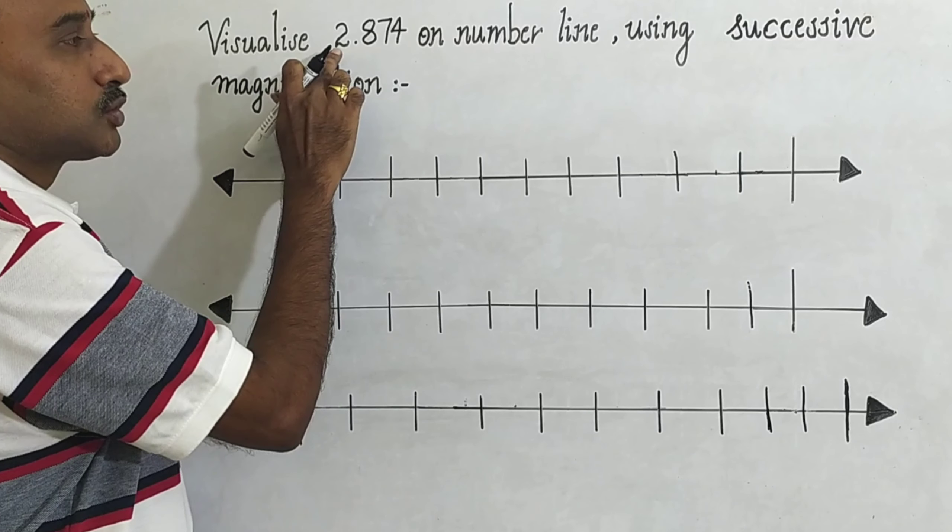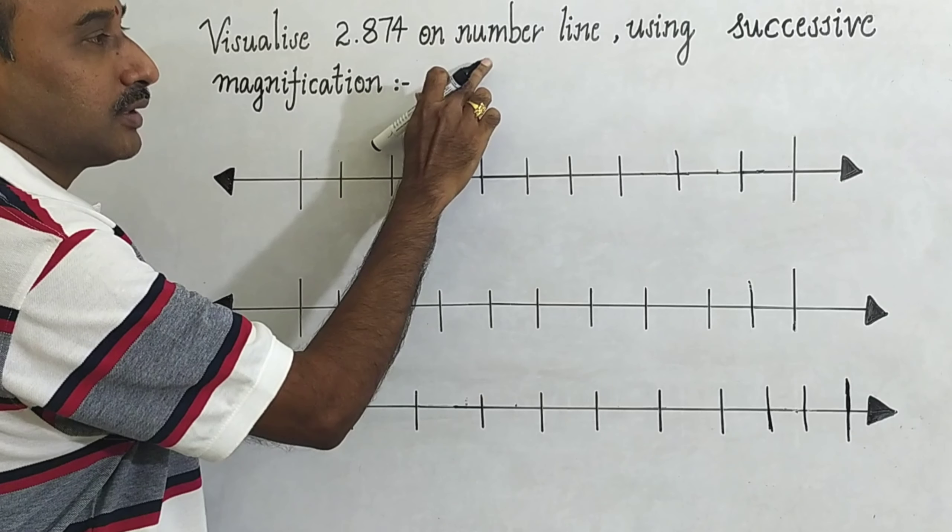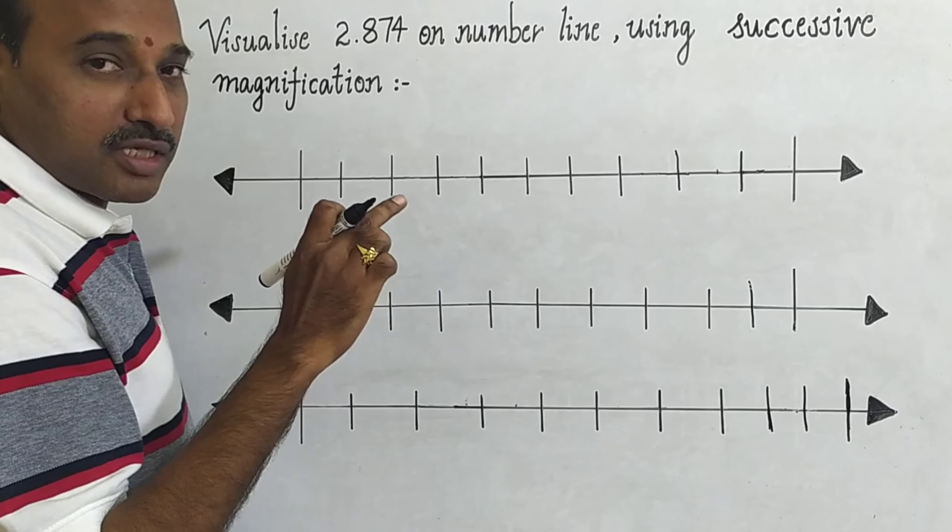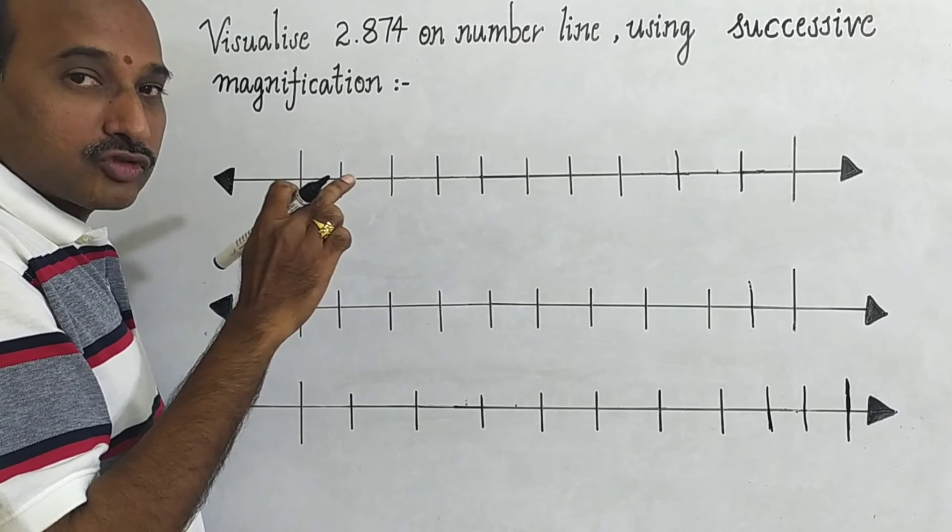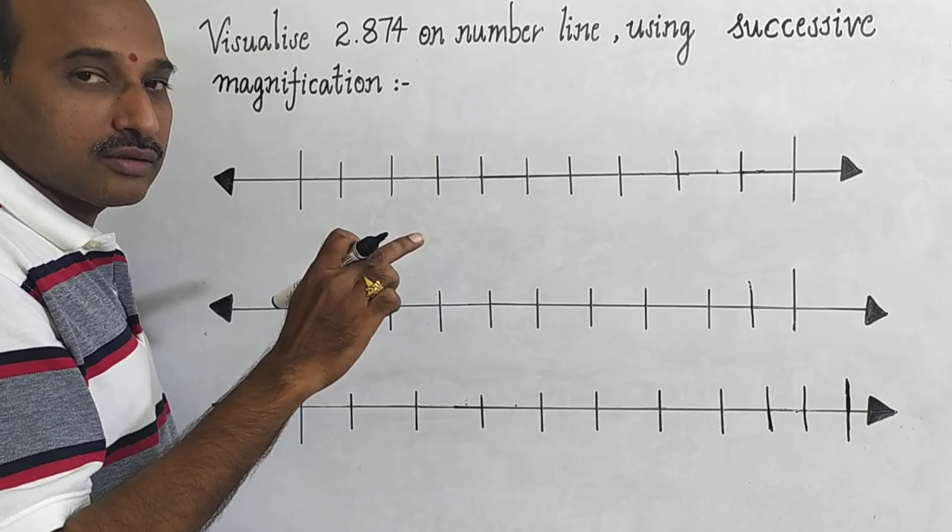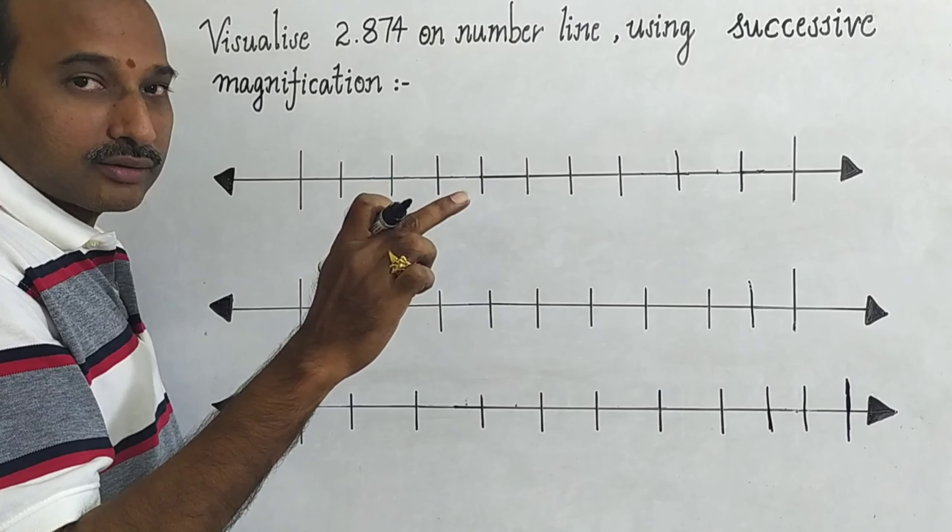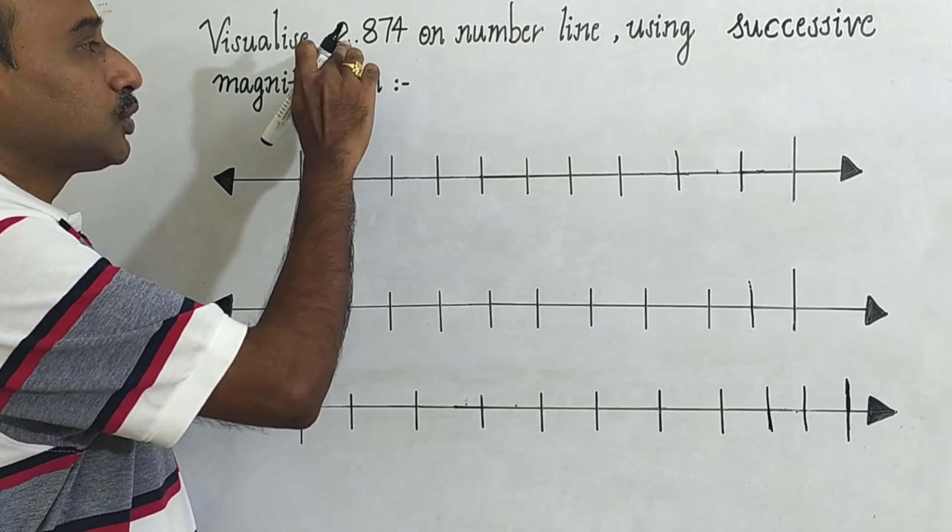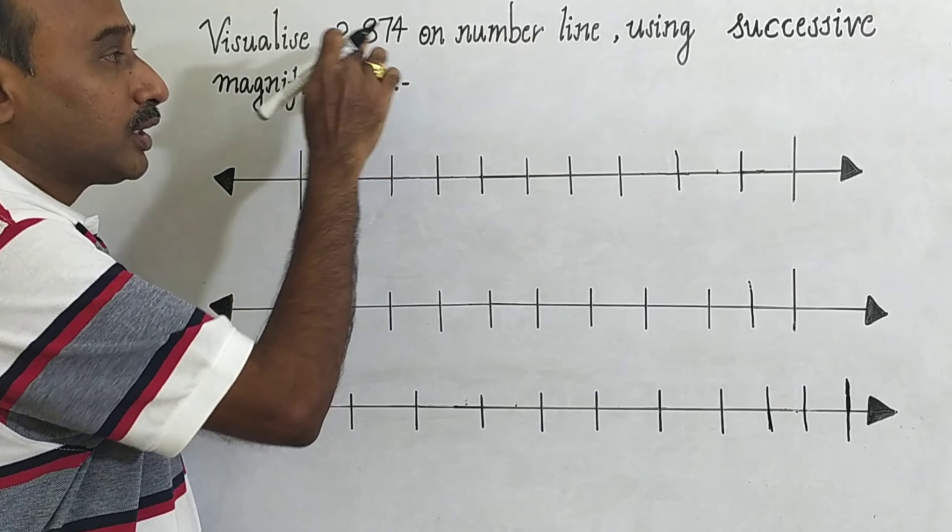Now come to visualize 2.874 on number line using successive magnification. What is the meaning of visualize? Visualize means make it visible to the eye, to be able to see it in your mind. Now come to 2.874, we know